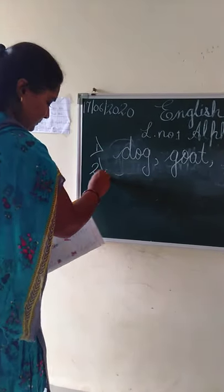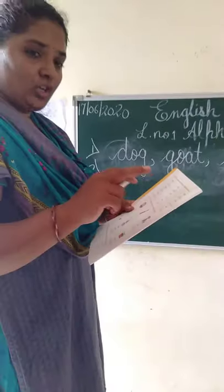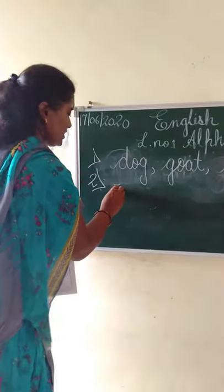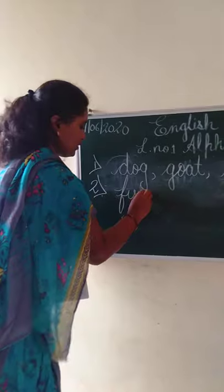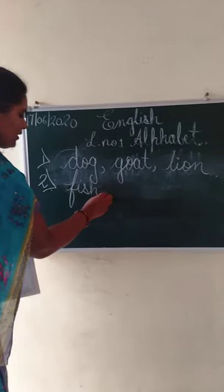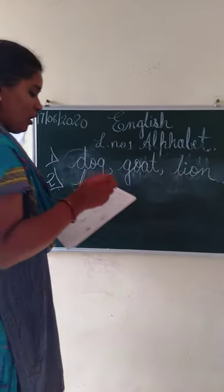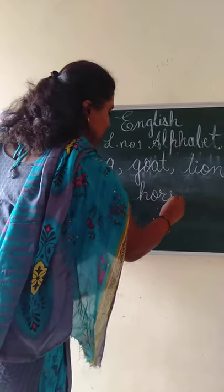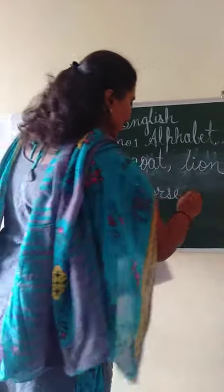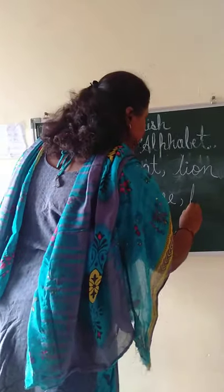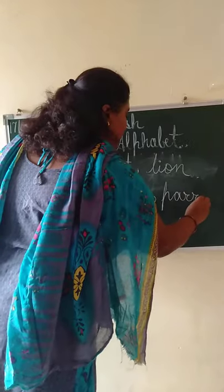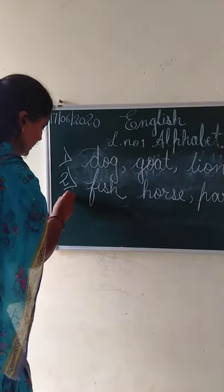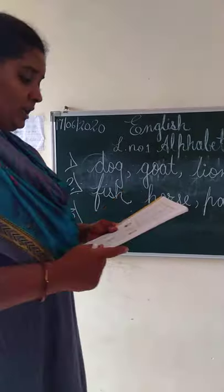The second set is: parrot, fish, horse. Which letter comes first? F comes first, so fish is first. Then H comes next, so horse is second. Then parrot. If you are not getting it the easy way, you have to say the alphabets to find the order.